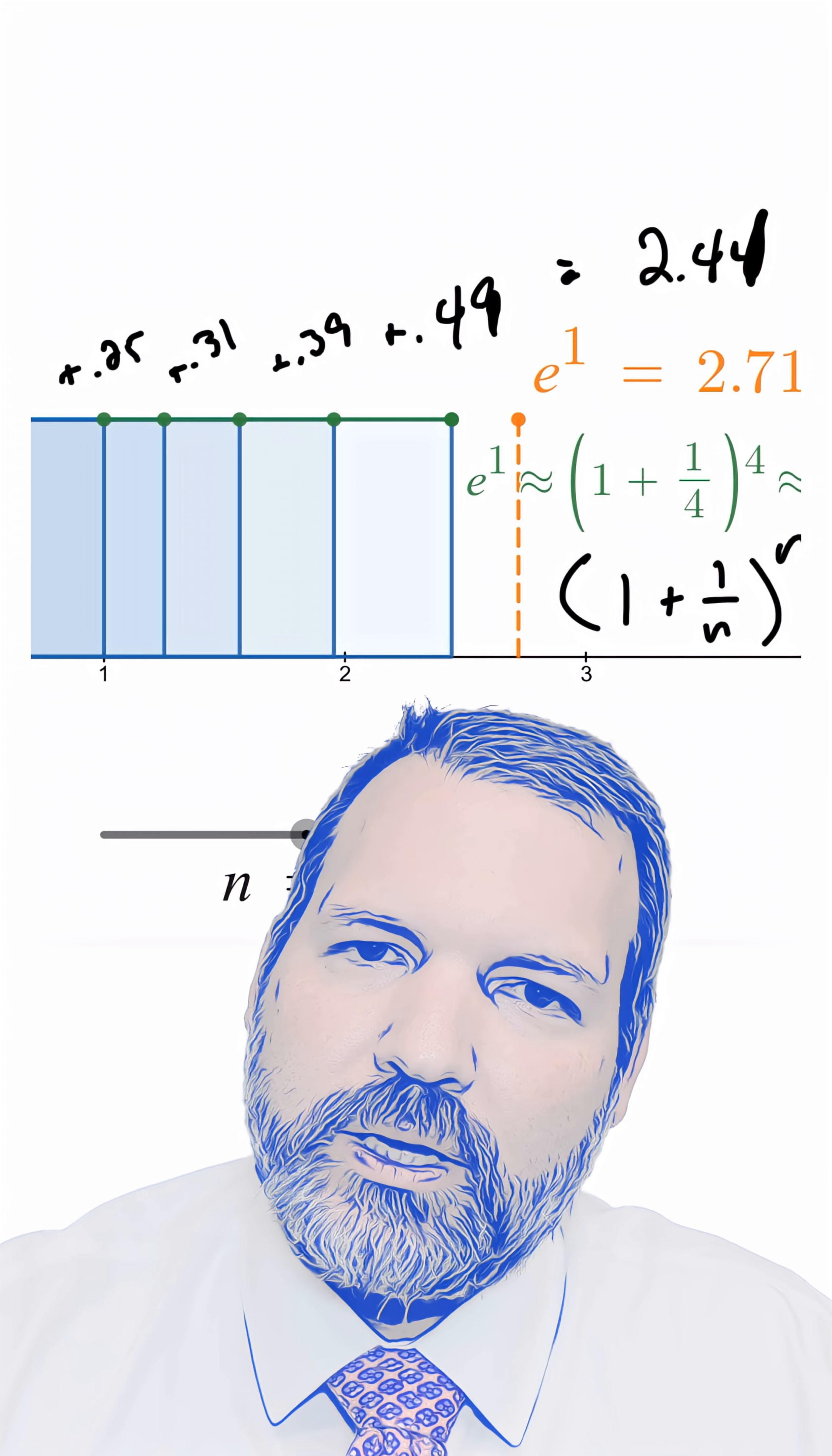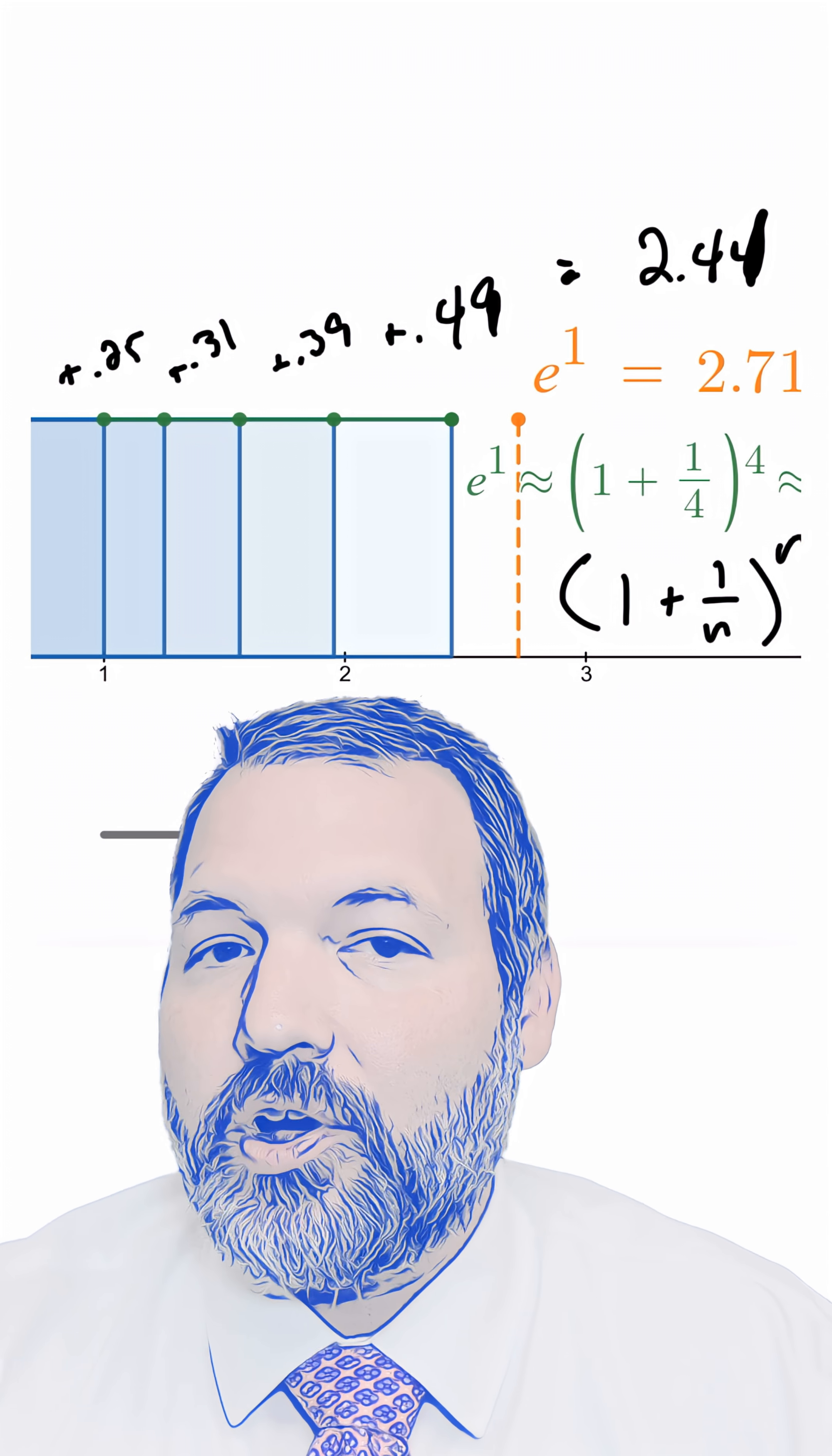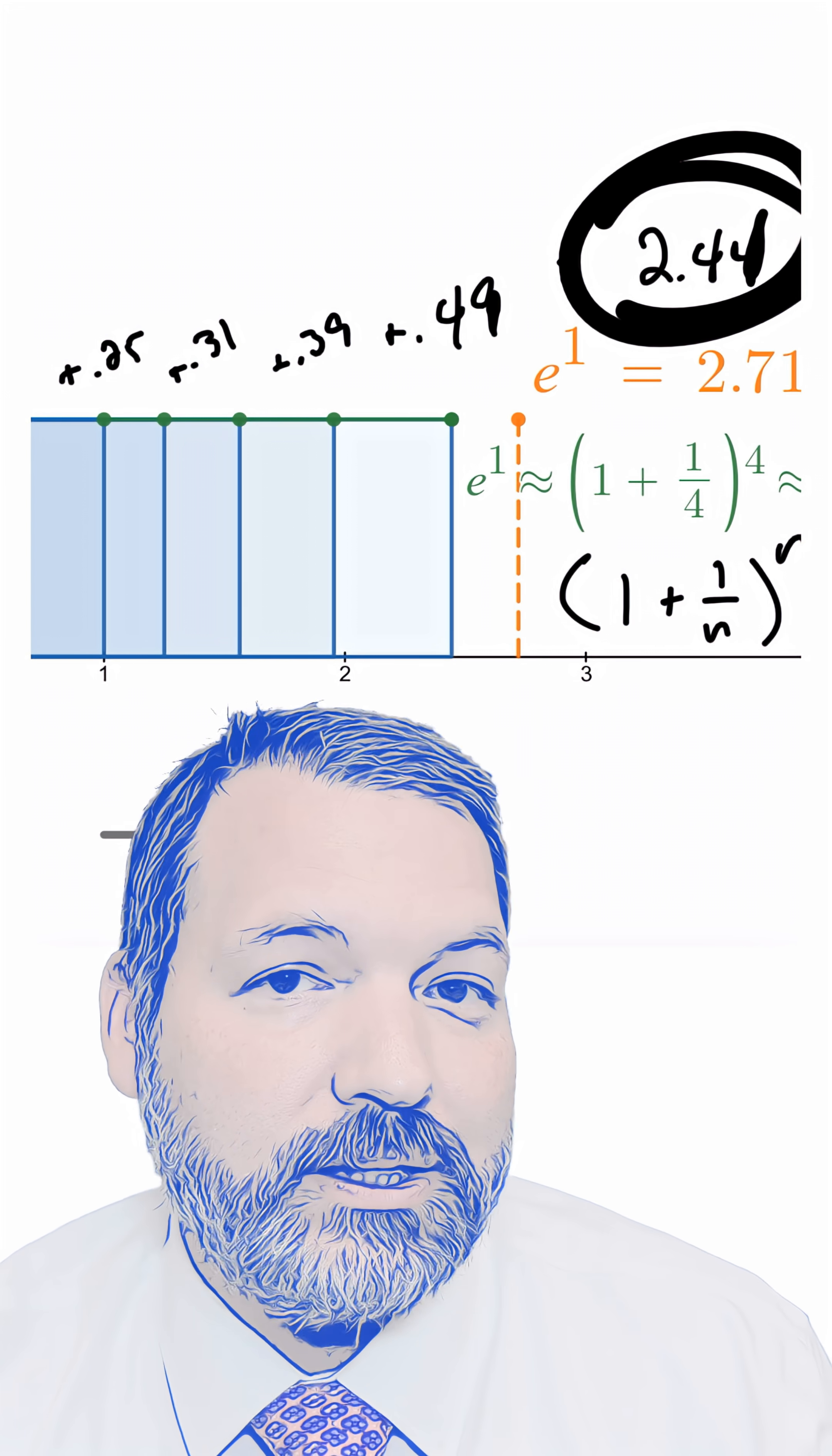When we went from only a yearly check-in to a six month and then a year check-in, we gained 25 cents on top of the two dollars. Now that we've gone to four check-ins throughout the year, we're only gaining another 19 cents over the $2.25 we had when we checked in at six months.